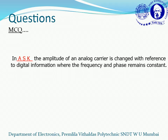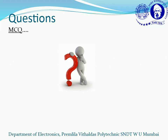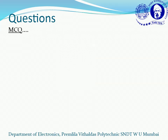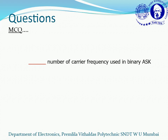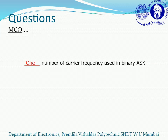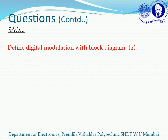Next question: how many carrier frequencies are used in binary ASK? Correct — one frequency, because in amplitude shift keying, amplitude is varied while frequency and phase remain constant.